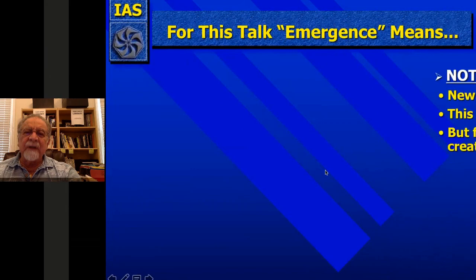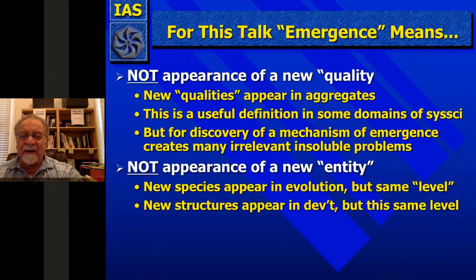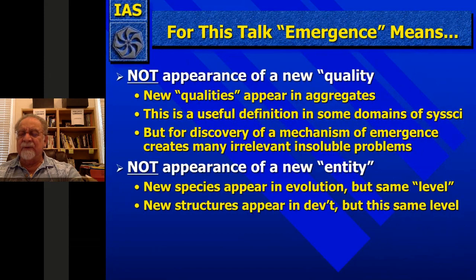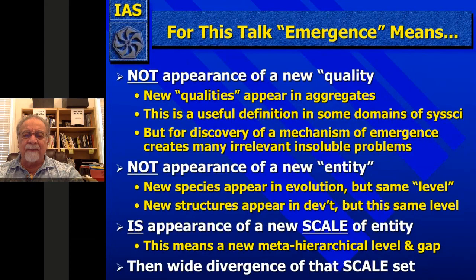For this talk, emergence does not mean the appearance of a new quality, as it does to Kaufman and others. New qualities appear in aggregates anyway — that's a useful definition in some domains, but for discovery of a mechanism of emergence it creates many irrelevant problems. It's not the appearance of a new entity like a species or a new compound. New species appear in evolution but they're within the same hierarchical level. New structures appear in development but still within the same level according to the same body plan.